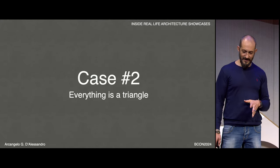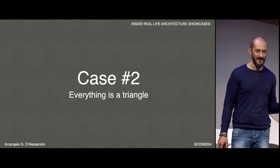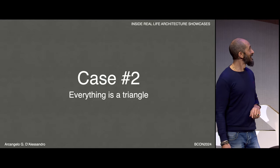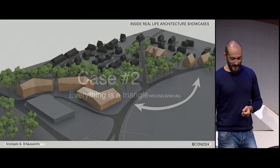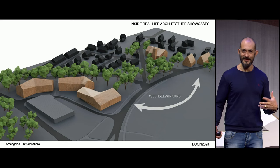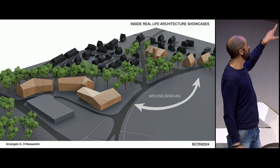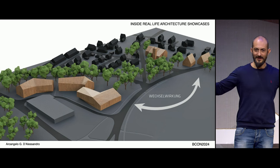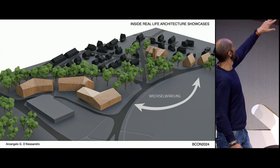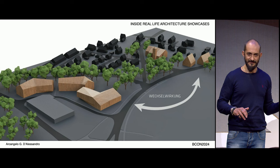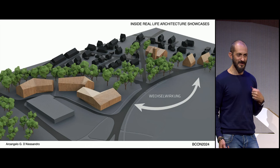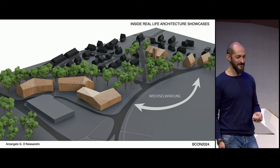Case number two: everything is a triangle. At the end of the day we can use NURBS surfaces, we can use everything, but we always end up with three points and a plane — that's it. But triangles are not very easy to manage when you want to translate them into construction elements. This is another project — three office buildings — and the main idea was to make a sort of low-poly roof with different kinds of inclination.